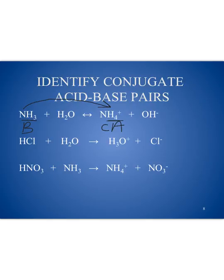Bases always turn into conjugate acids, so the product NH4+ is called the conjugate acid (CA). That means the water turns into hydroxide. We start with two hydrogens and end with just one, so the water has donated a hydrogen — that makes the water an acid. Acids turn into conjugate bases. So we've identified our two conjugate acid-base pairs, one in black and one in red.